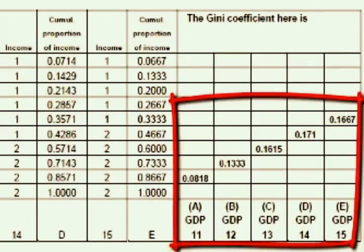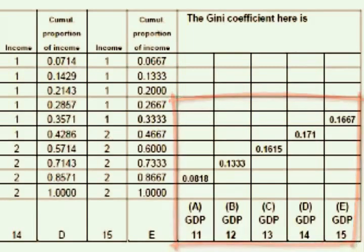Reducing income inequality is not a high priority at this stage of development. When an economy is largely rural and beginning to modernize, inequality will naturally increase according to this measure, and policymakers just have to live with that. Things will get worse in terms of income inequality before they get better — that's just how the process works itself out.